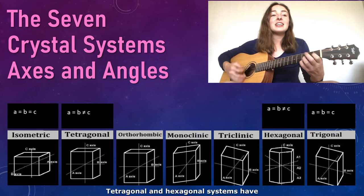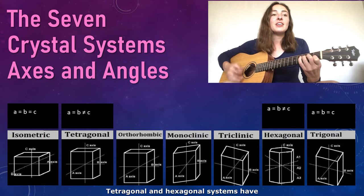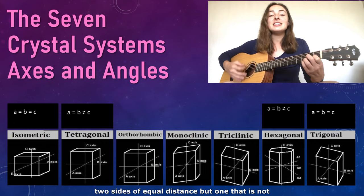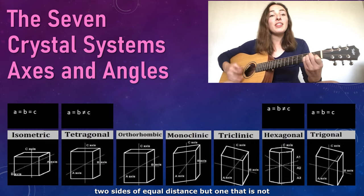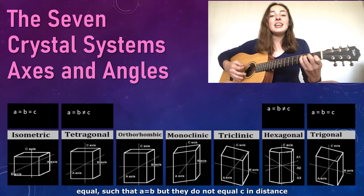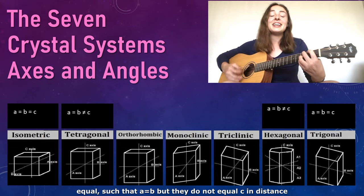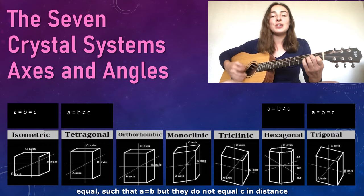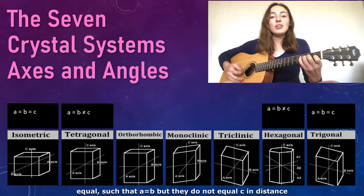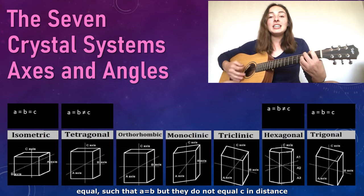Tetragonal and hexagonal systems have two sides of equal distance but one that is not, such that a equals b but they do not equal c in distance.